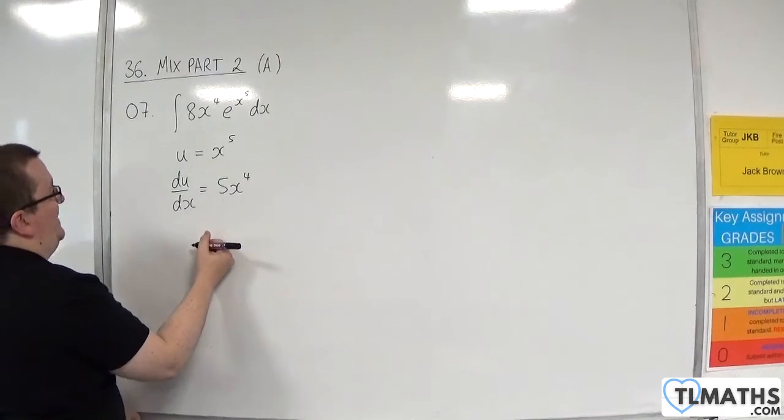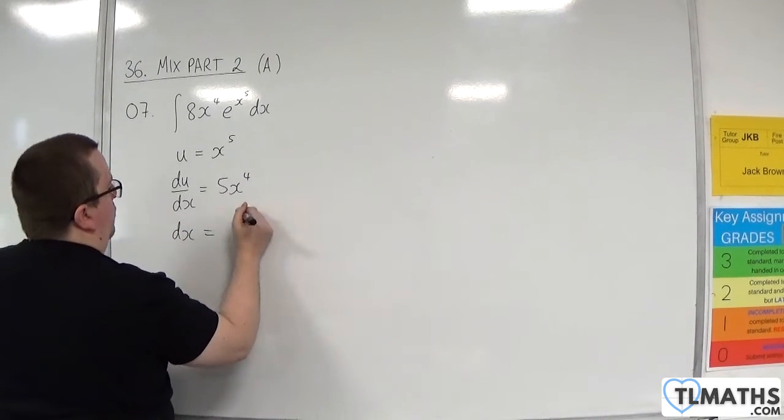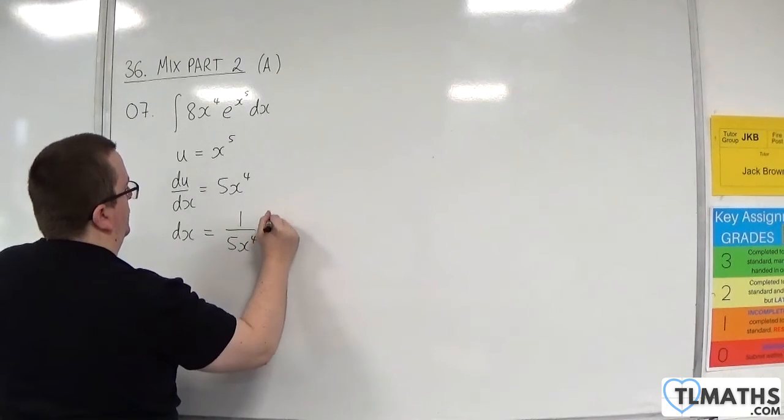Rearrange that to get dx equals, so that would be 1 over 5x to the 4 du.